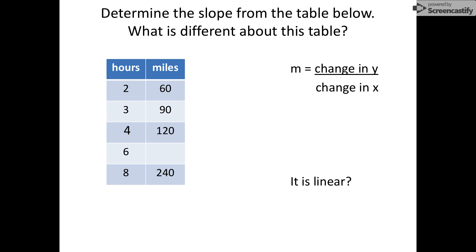Our last example asks us again to determine the slope, our change in y over our change in x, and says what's different about this table. Well, we only have one missing space here, but instead of an x and a y, we have hours and miles. So I'm going to start you off, and let's get started and see if you can finish it.